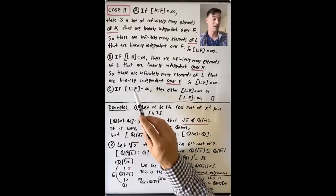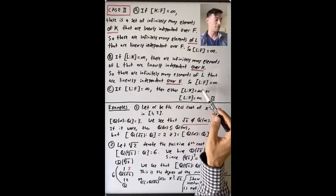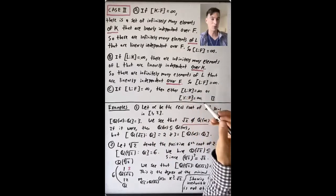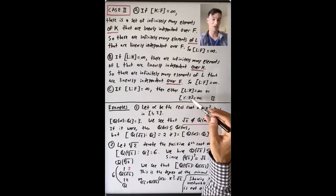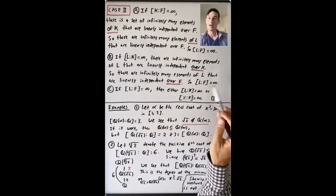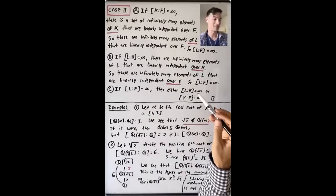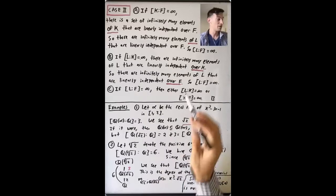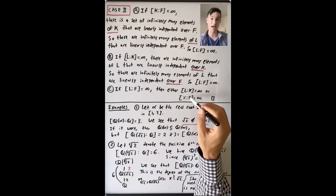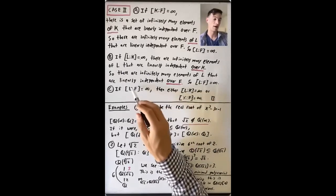The last piece: if the degree of L over F is infinite, then either the degree of L over K or the degree of K over F must be infinite — because we proved in case one that if both of those degrees are finite, then the degree of L over F is finite, equal to their product. So that completes the proof of Theorem 14. The important idea is to write down a basis for L over K and a basis for K over F, and show that products of these basis elements give a basis for L over F.